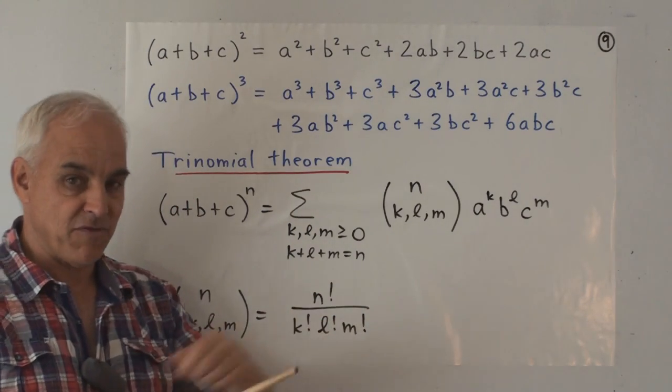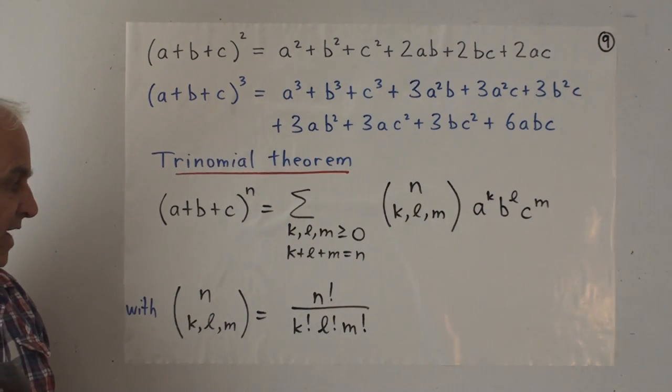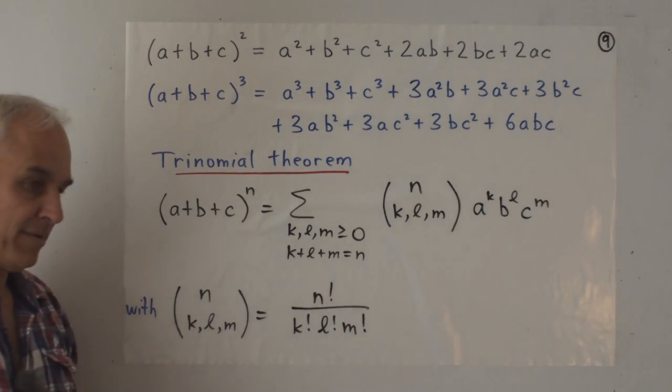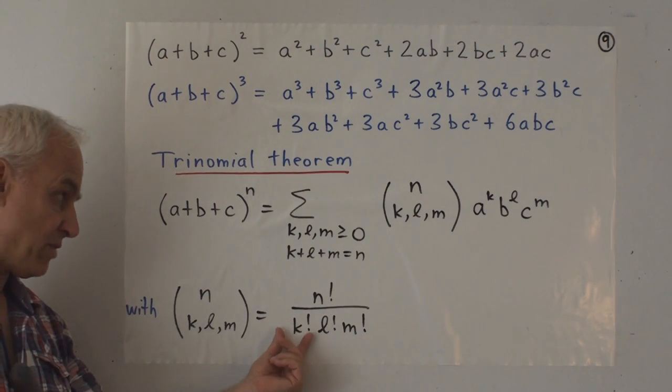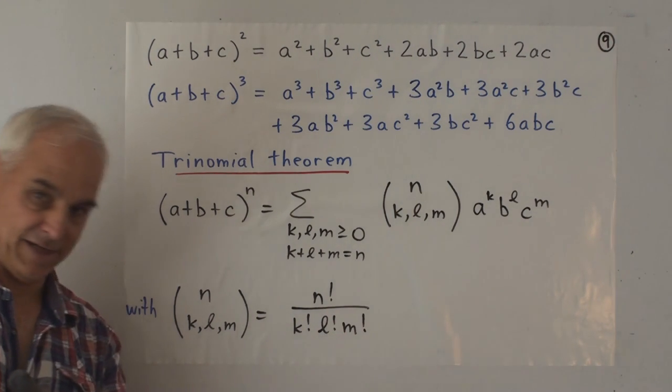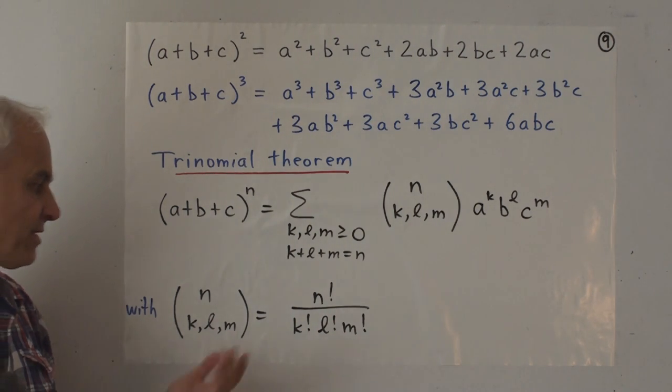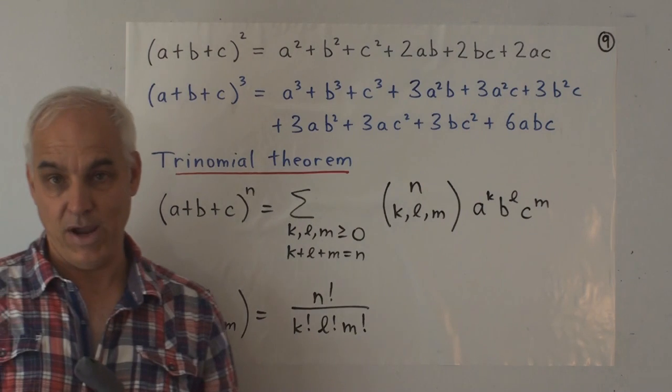the b's b1 through bl, and the c's c1 through cm. And then the number of ways of putting those on the n places is n factorial. And then if we want to take the labels off, we have to divide by the number of arrangements of the a's, the number of arrangements by the b's, and the number of arrangements of the c's. So it's pretty well exactly the same pattern as with the binomial theorem if you think about it the right way.